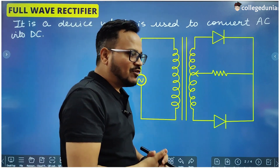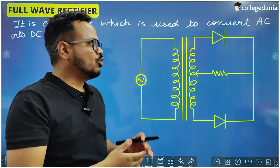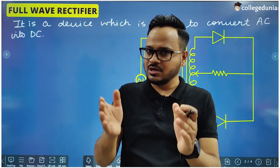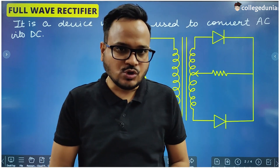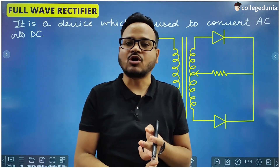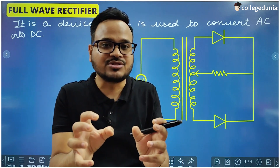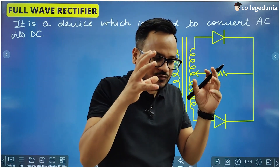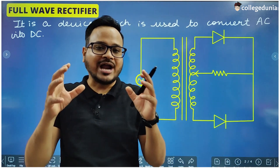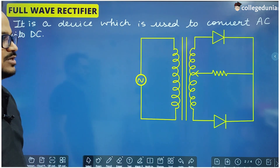For example, full wave rectifiers are used in the adapters and chargers of mobile phones and laptops. When you charge the battery of your mobile phone, the battery supplies direct current to the mobile phone. But the main supply contains alternating current. So we need something in between to convert AC into DC. All adapters and chargers of devices which work on DC but are charged through AC contain a full wave rectifier.